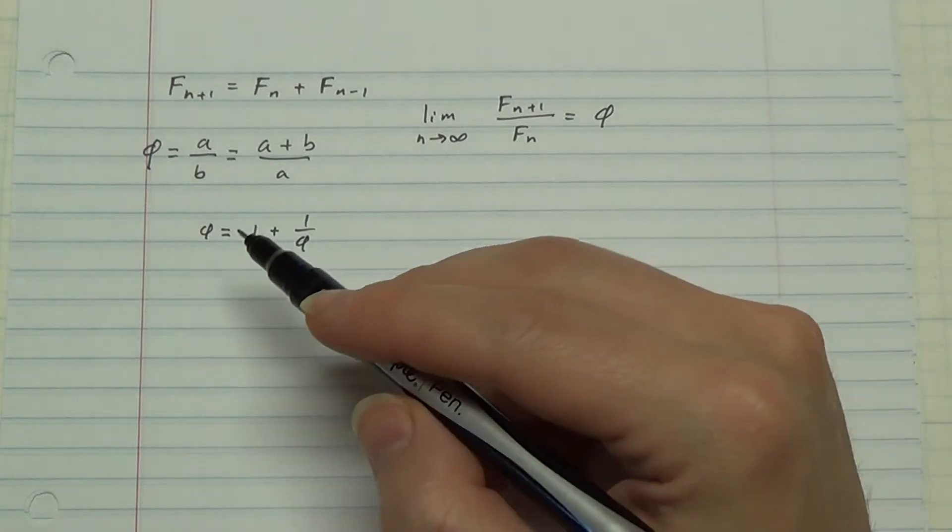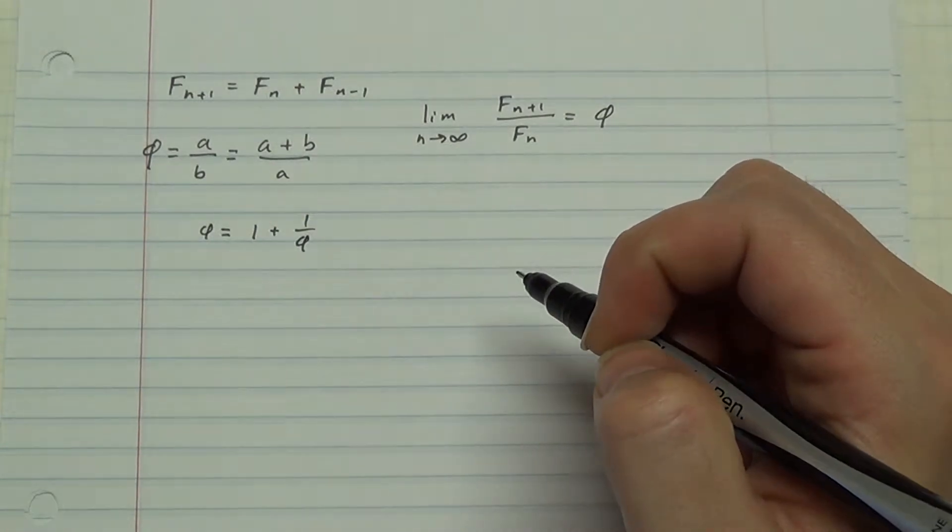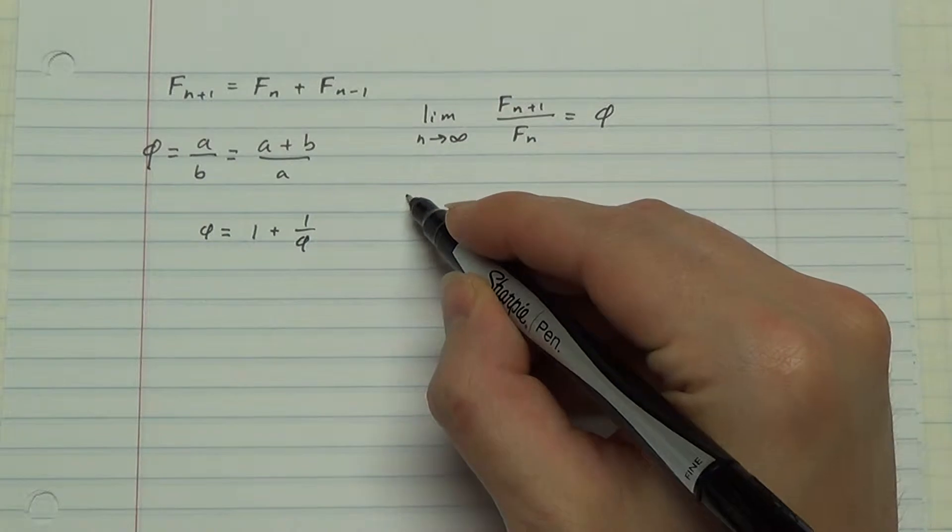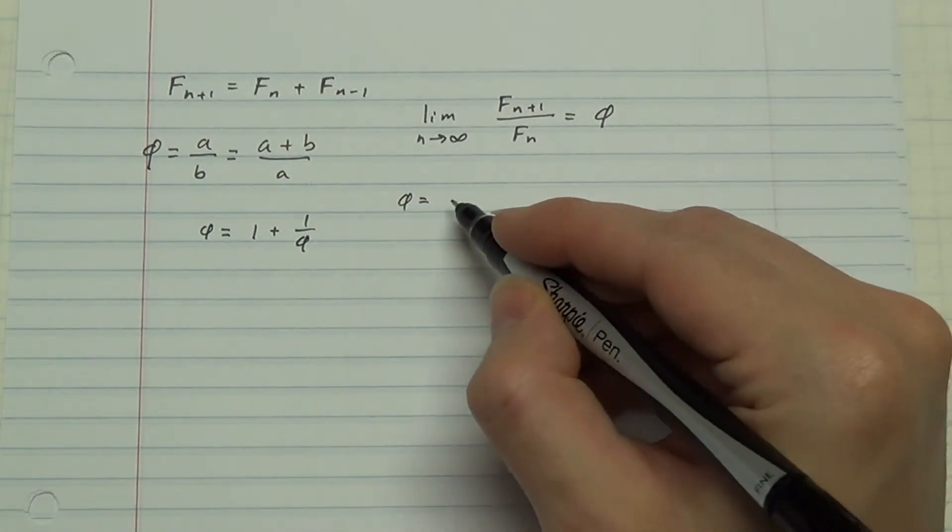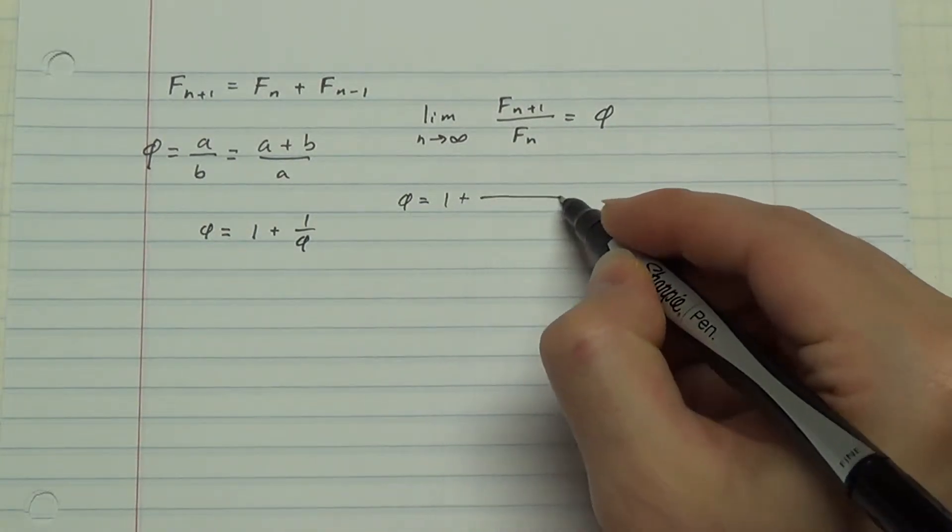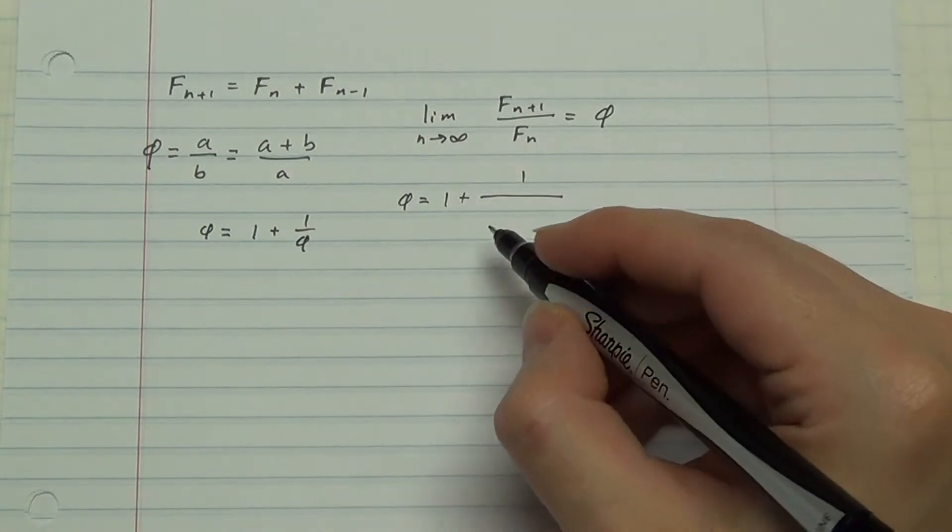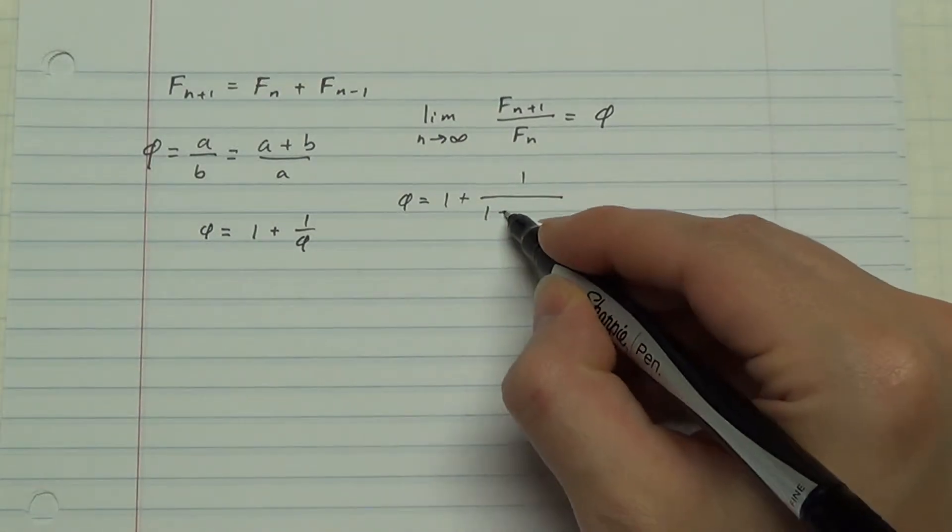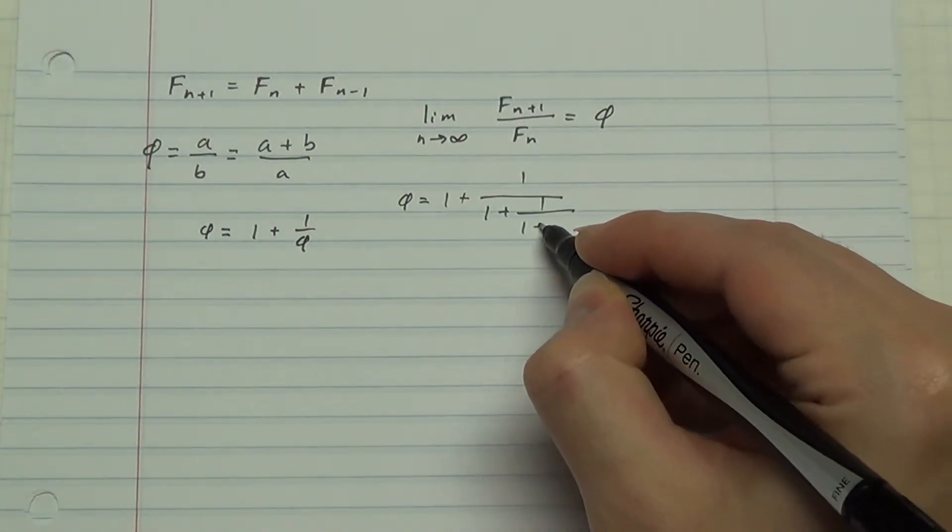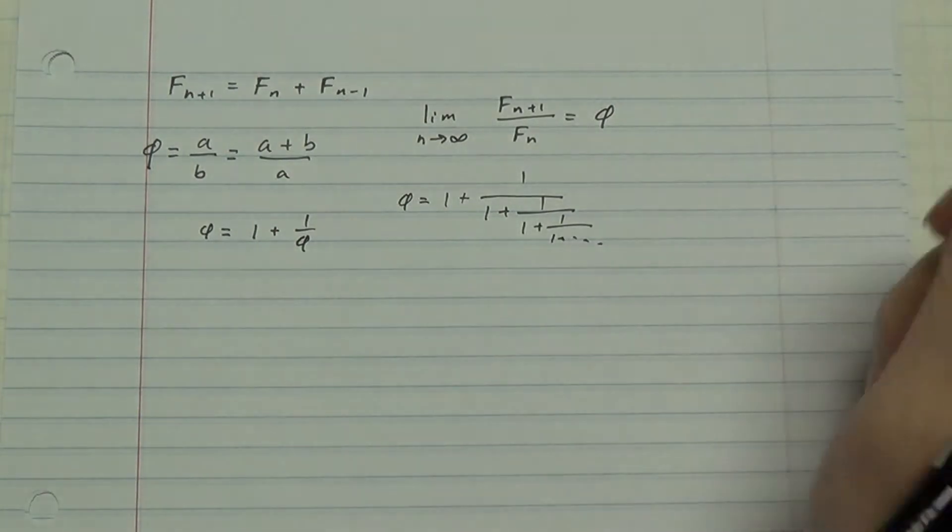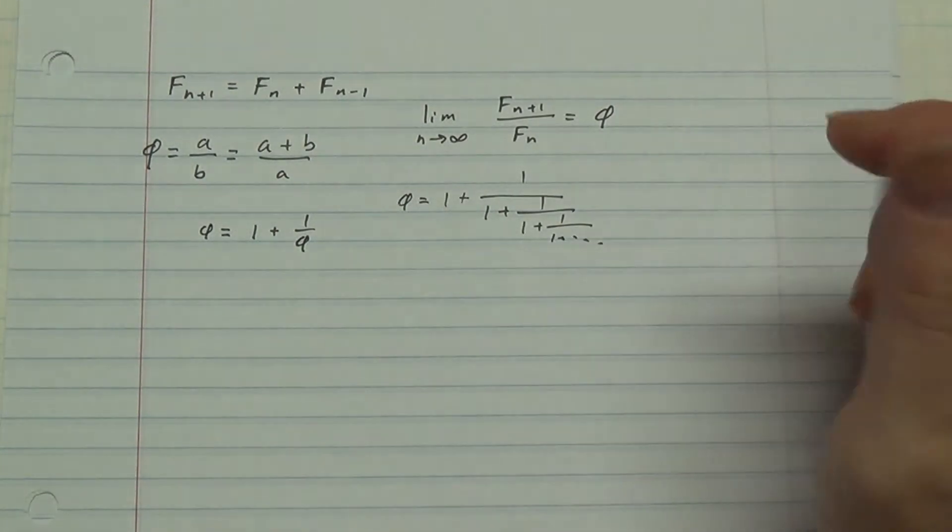Incidentally, this suggests an interesting way to write phi. Phi is equal to 1 plus 1 over phi, but phi is equal to 1 plus 1 over phi, and so on. Continued fractions. Very nice.